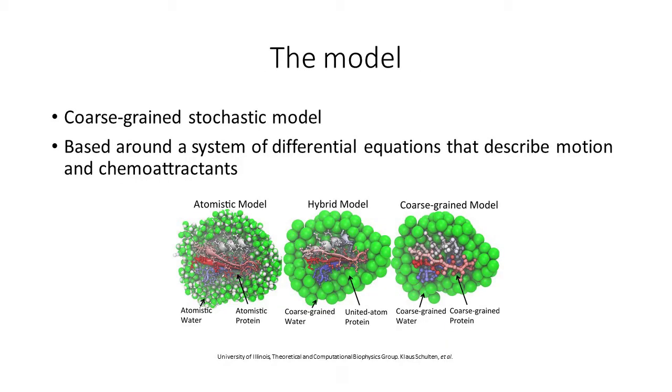OK, so the model that I used was a coarse-grained stochastic model. What this just means is in our model, we left out anything that was irrelevant to what we were studying. So in our model, we only considered three forces and one chemical signaling gradient.